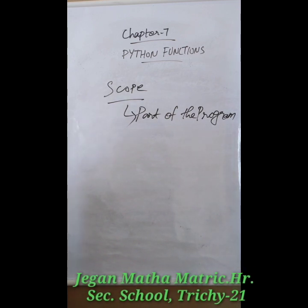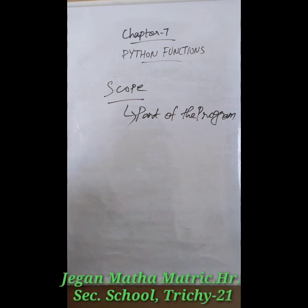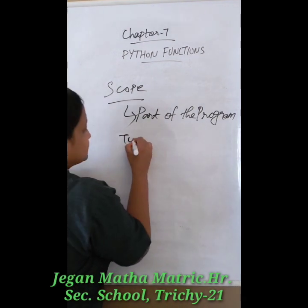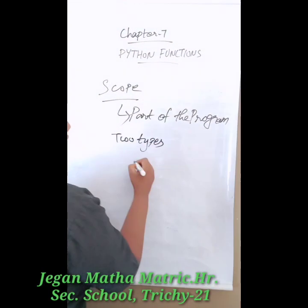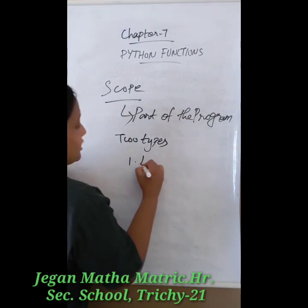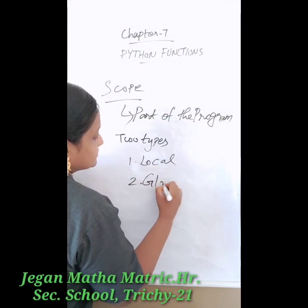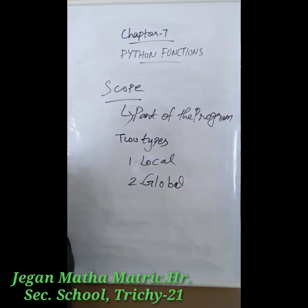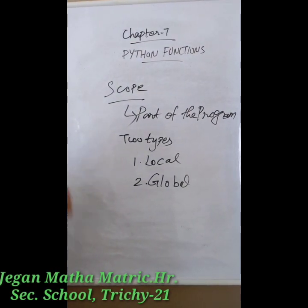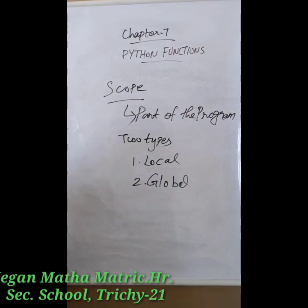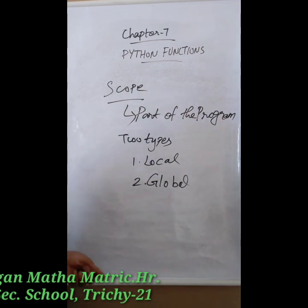Scope is used to hold values in variables, and it has two types: one is local and another one is global. Local variable and global variable — local scope and global scope. The first one is local scope.